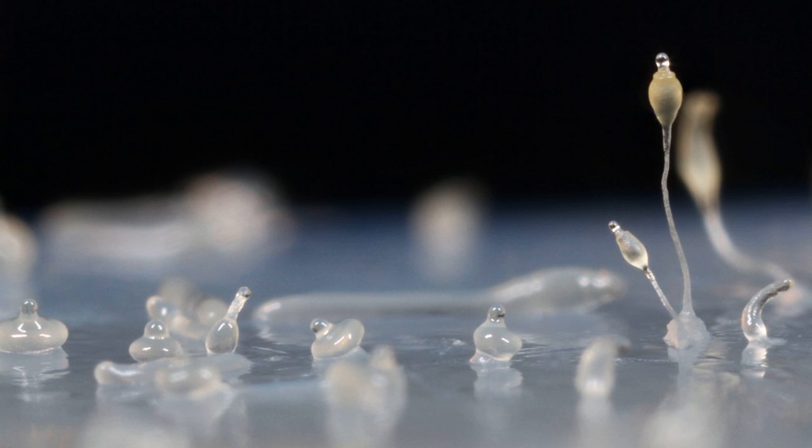In Dictyostelium, aggregation is signaled by CAMP, but others use different chemicals. In the species Dictyostelium purpureum, the grouping is by kinship, not just by proximity.